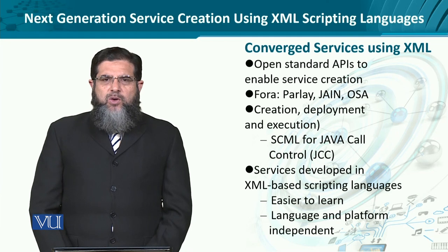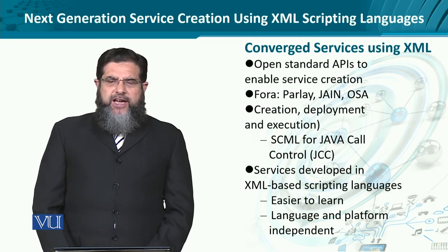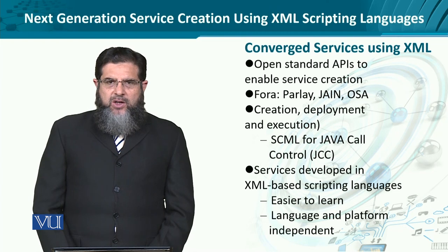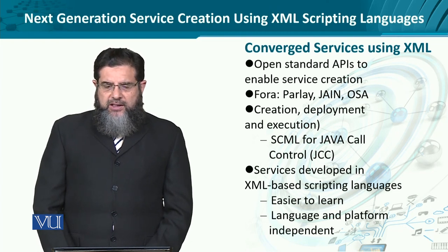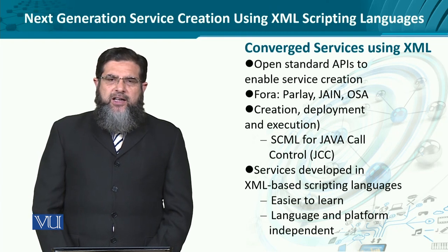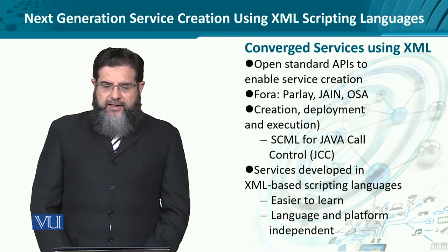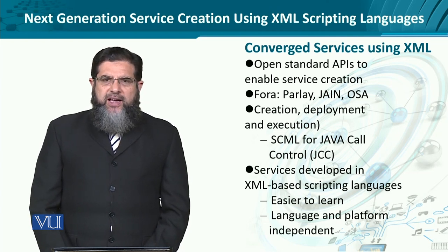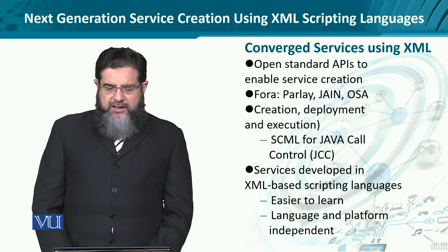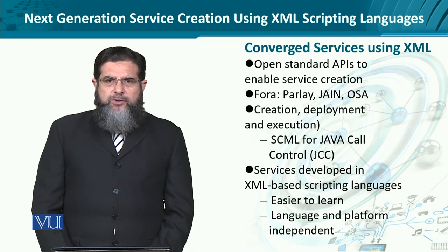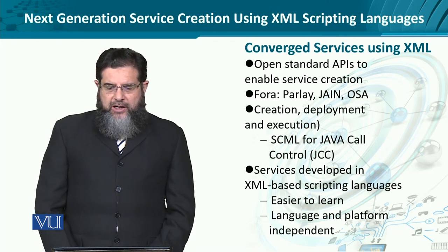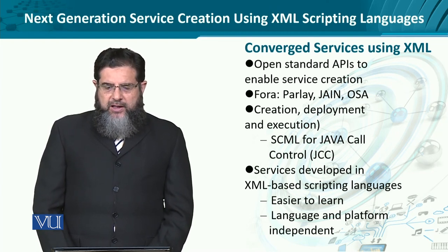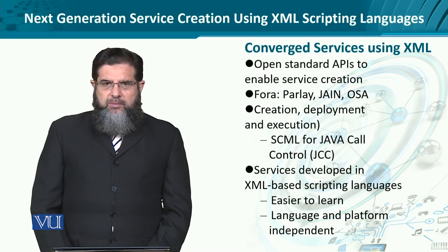Various fora, including Parlay, JAIN for Java Integrated Networks, and the Open Service Access for Universal Mobile Telecommunication Standard, require services to be created, deployed, executed, terminated, and removed through APIs. These APIs are to be used by lay or wannabe developers. The Service Control Markup Language for Java, for instance, uses Java control and Java call control — functionality provided by Java to be used by a markup language.